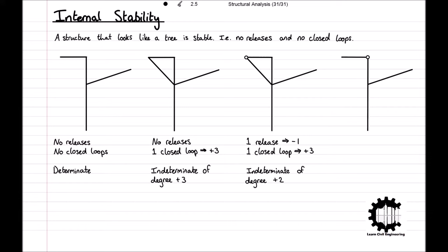Finally, let's have a look at another similar structure. This fourth structure is most similar to the first, in that it does not have a closed loop, however this structure does have a hinge connecting two members. For this structure then, the degree of internal stability is equal to negative one, and so the structure is internally unstable.